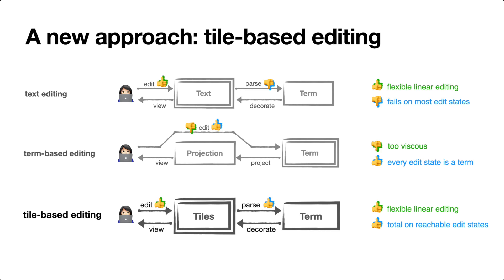In a tile-based editor, we return to the indirect editing model of text editors. Rather than editing the term structure, the programmer edits a more relaxed structure made of these things called tiles, which makes it easier to edit. But unlike text, we can make sure that these tiles are sufficiently well structured so that we can always parse them into the term structure as needed.